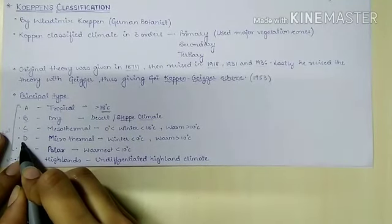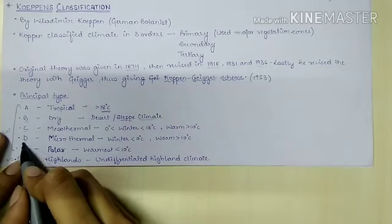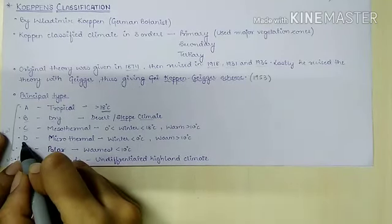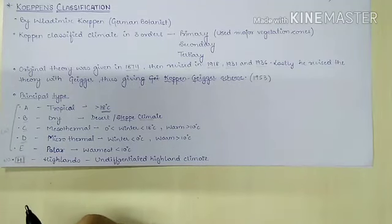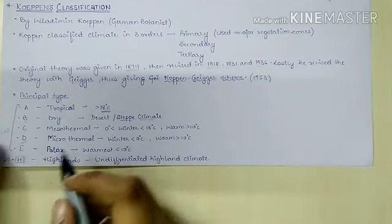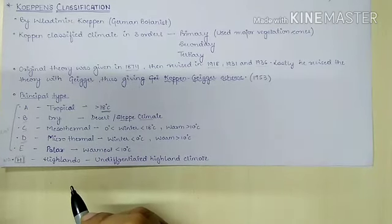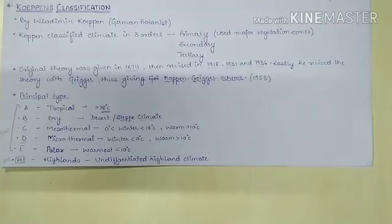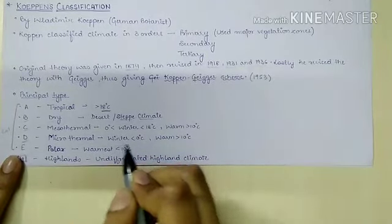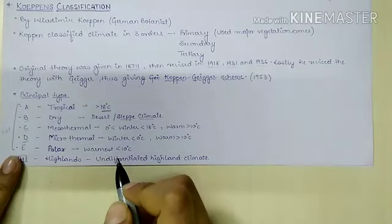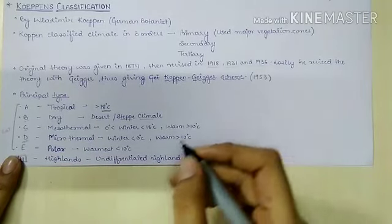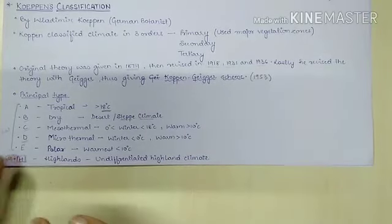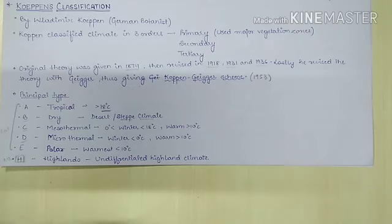Type D, denoted by capital D, represents microtherms — humid microthermal or cold forest climate. These are characterized by severe winters, and the average temperature of the coldest and warmest month is between minus 3 and above 10 degrees Celsius.